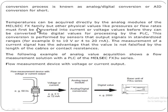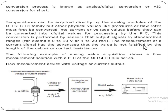Other physical values like pressures or flow rates must first be converted into current or voltage values before they can be converted into digital values for processing by the PLC. This conversion is performed by sensors that output signals in standardized ranges, that is 0 to 10 volts or 4 to 20 milliamperes.